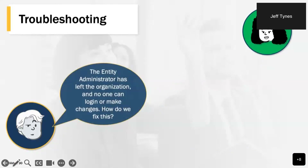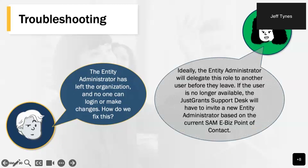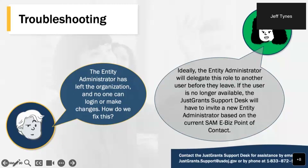We are also often asked what should be done if the entity administrator has left the organization and no one has been designated to take that role. It is best if the reassignment happens before they leave, but we realize that's not always possible. If the entity administrator has left without reassigning the role, there will be no one able to update your user record or assign work. The best way to fix this is to contact the JustGrants support desk, but first update your eBiz point of contact at SAM.gov, because that person will be assigned as your new entity administrator.